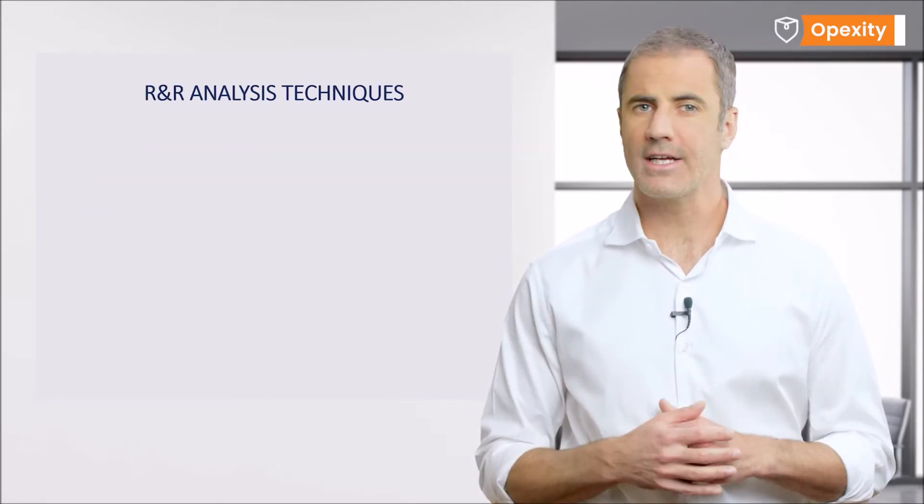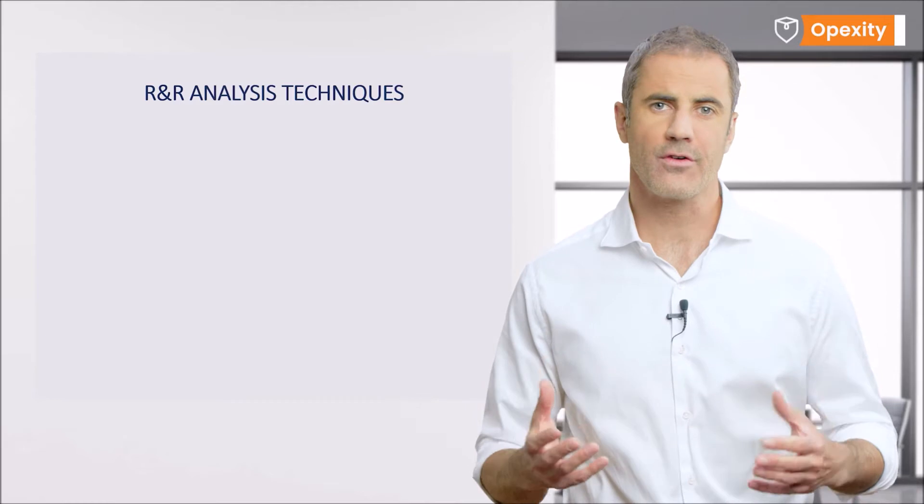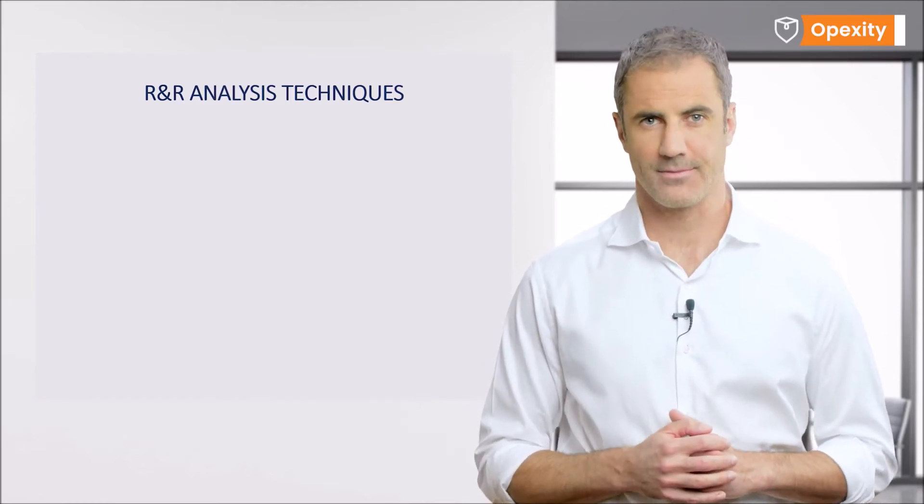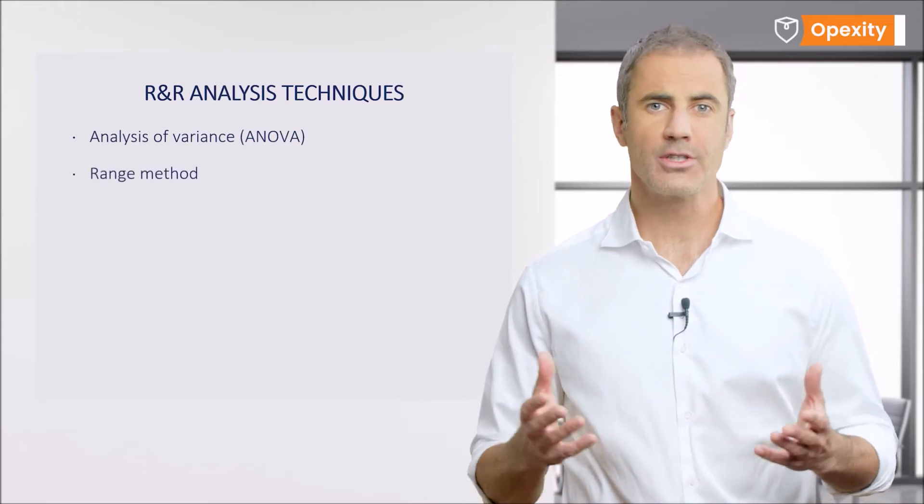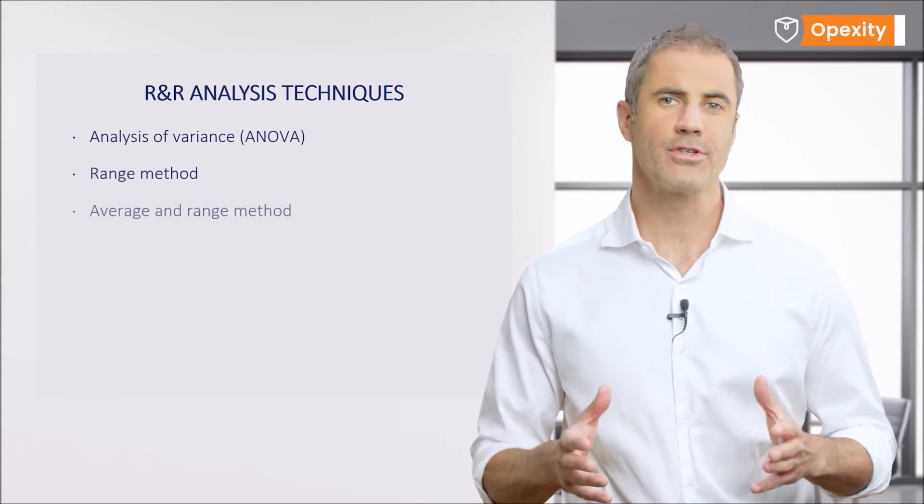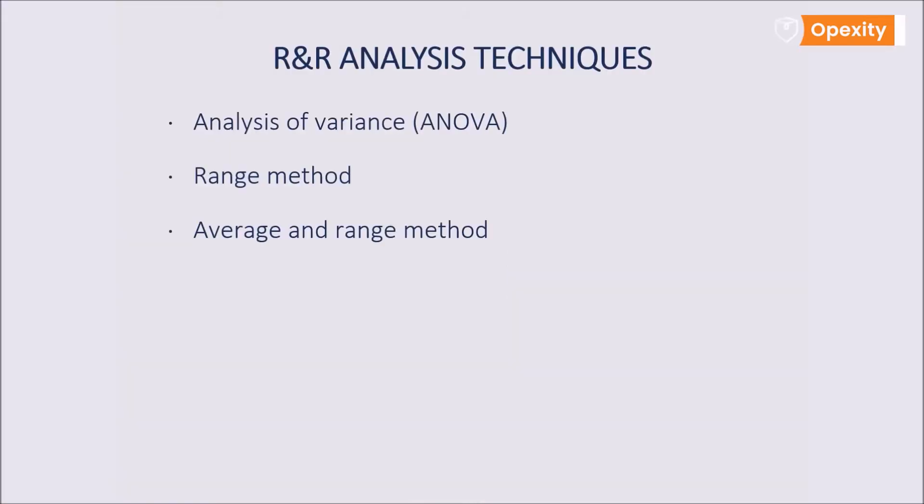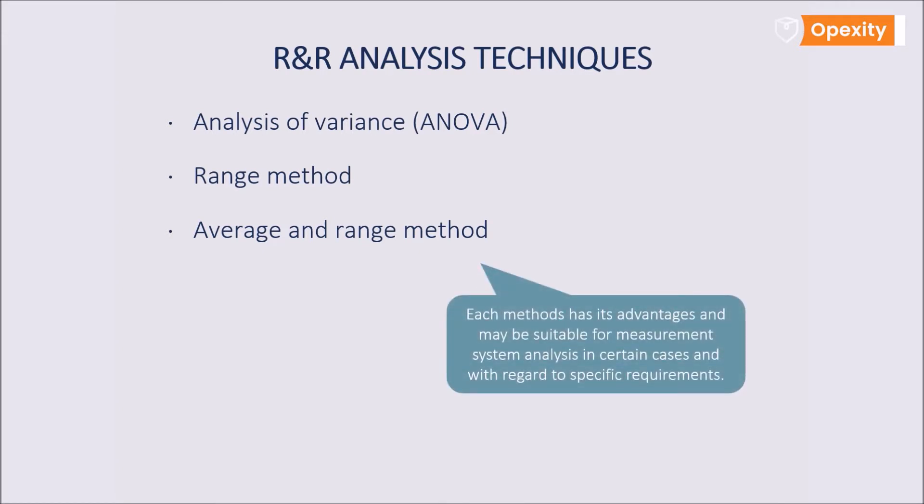You can analyze the gauge R&R study using one of the following analysis techniques: analysis of variance (ANOVA), range method, or average and range method. Each method has its advantages and may be suitable for measurement system analysis in certain cases and with regard to specific requirements.